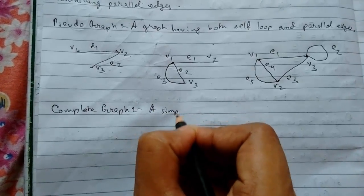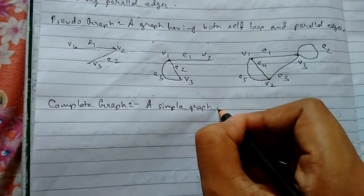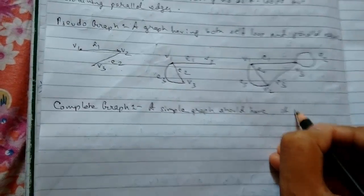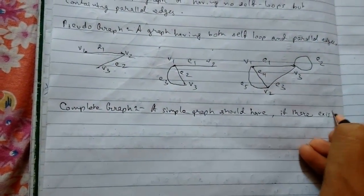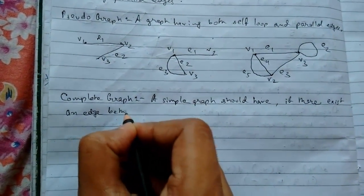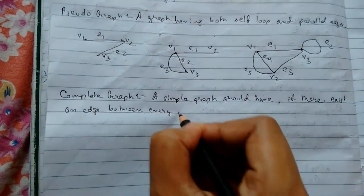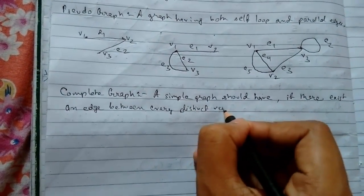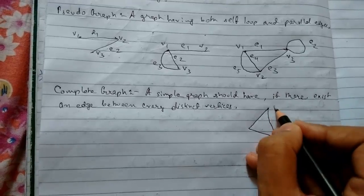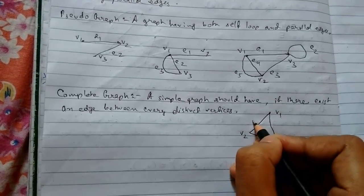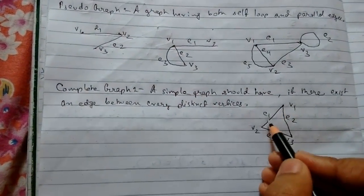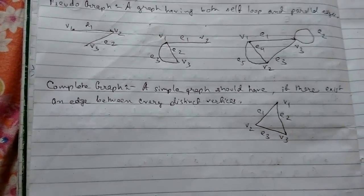Complete graph: a simple graph in which there exists an edge between every pair of distinct vertices. For example, vertices V1, V2, V3 with edges E1, E2, E3 — each vertex is connected to every other vertex.